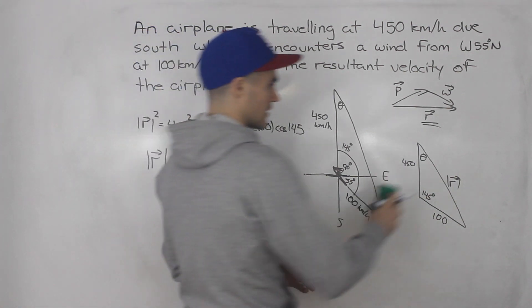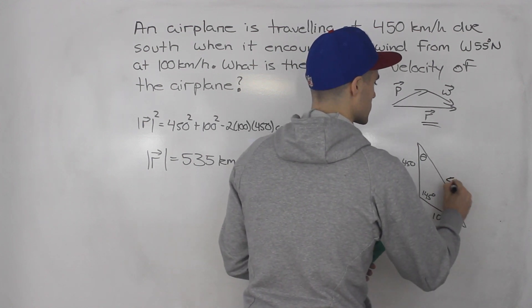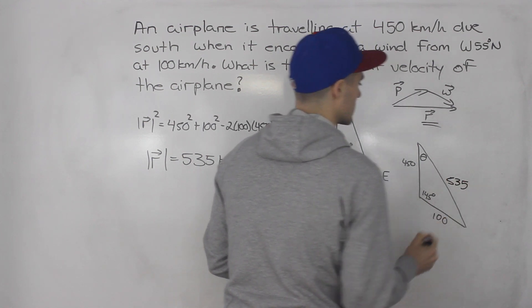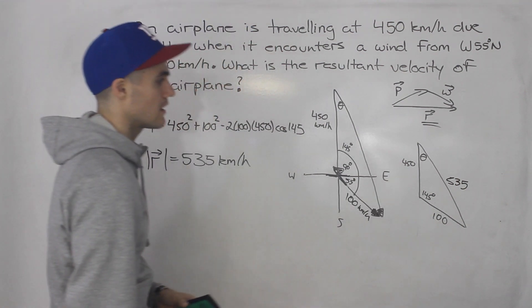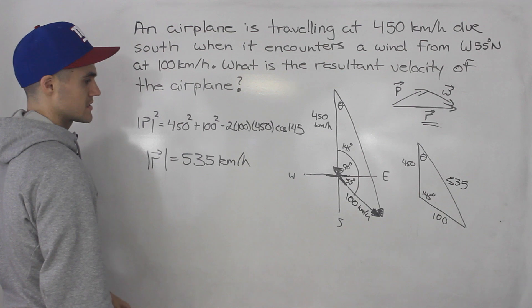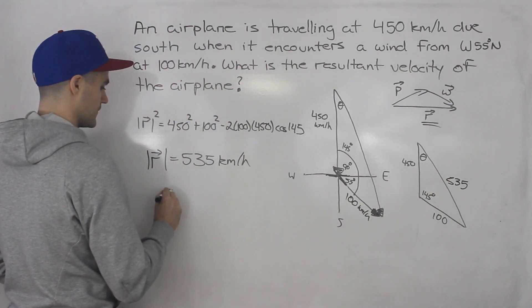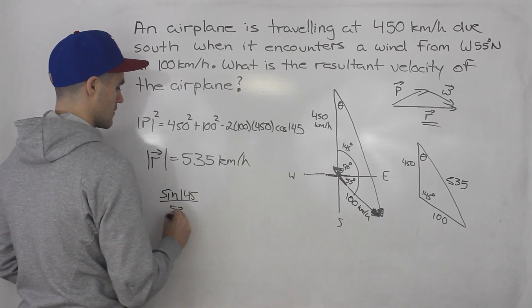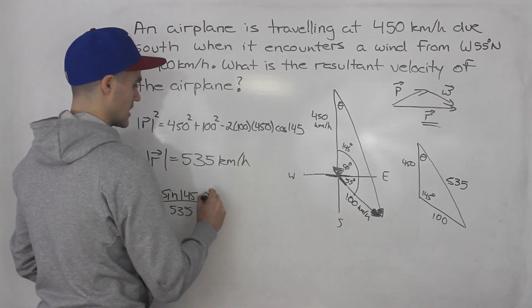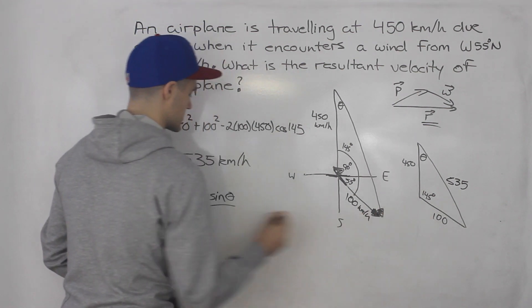So that there is the resultant speed, but they want the resultant velocity, so we're also going to have to get the direction. So we're going to solve for this theta. We can use sine law, so we could do sine of 145 over 535 equals sine of theta over that opposite side 100.